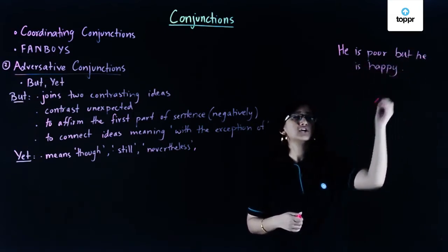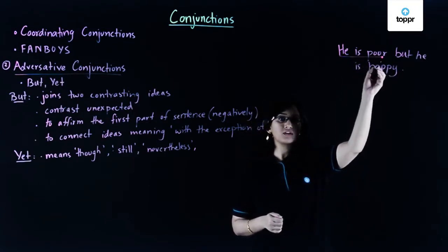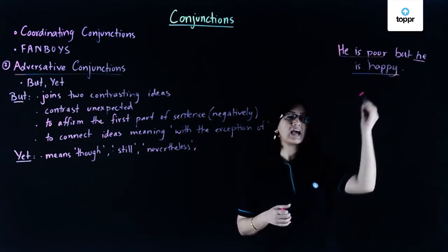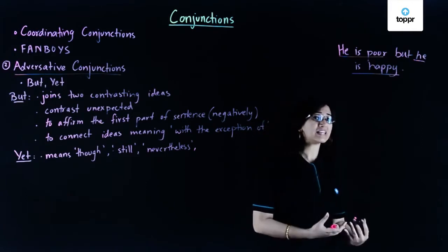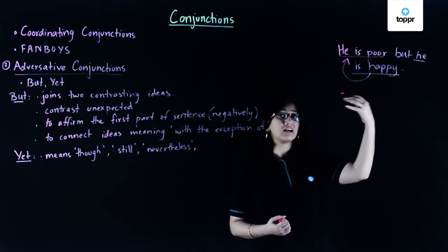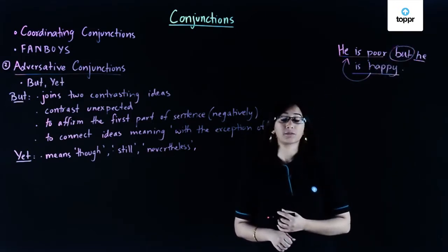In this statement you can clearly see that even though he is poor, it is unexpected that he is happy. If they're poor we would expect them to be unhappy, but here it is in contrast—it is unexpected that he is happy. Therefore we have been able to use the word but.